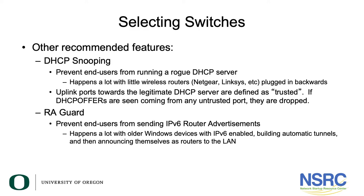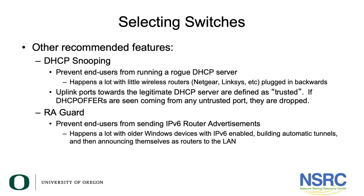Once the tunnel is set up, these devices then announce themselves as IPv6 routers out their ethernet ports, and suddenly all your user devices with v6 capability will configure a v6 address and use this old Windows device as the gateway to the internet. This is not only a major security risk, it could be a massive bottleneck for campus traffic as this traffic heads out to some unknown tunnel destination somewhere else in the world. RA Guard will prevent this from happening and is really quite necessary for a campus network.